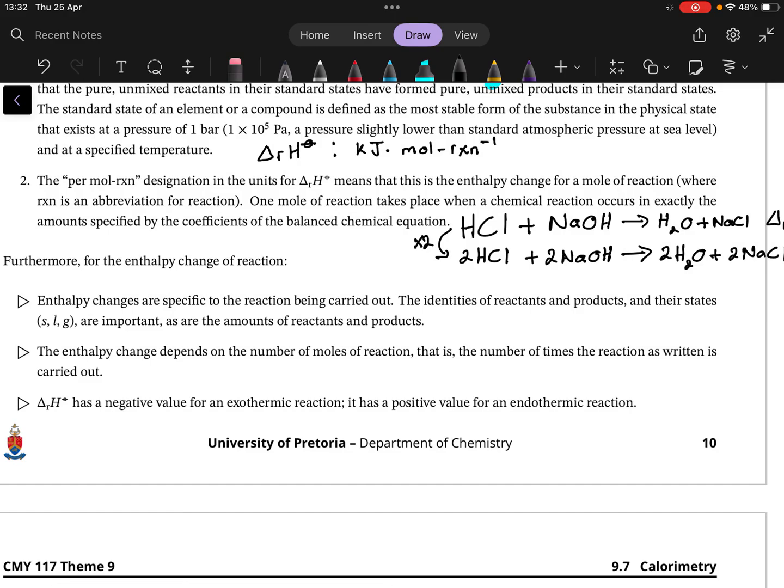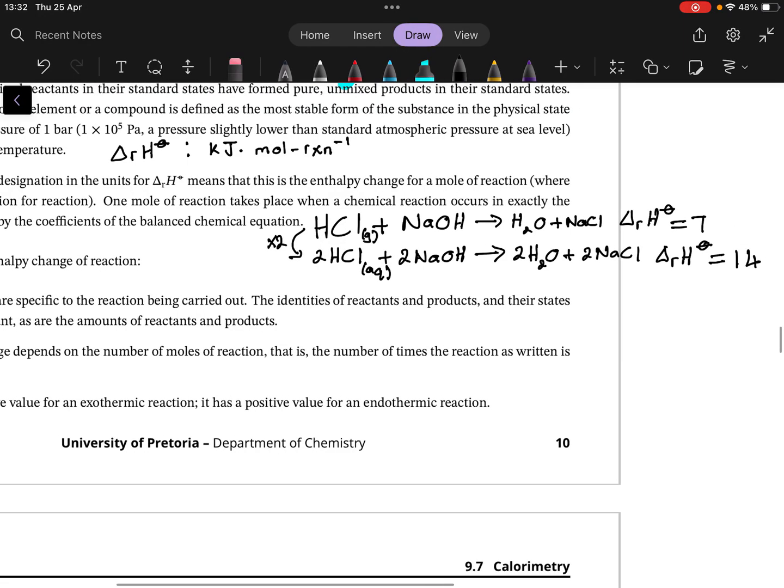Importantly, the states of reactants—solid, liquid, gas, aqueous—are important. For example, if you had gaseous HCl versus aqueous HCl, you won't be able to compare those two equations because delta rH for gaseous HCl will be completely different than for aqueous phase.